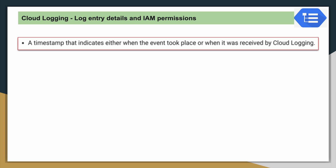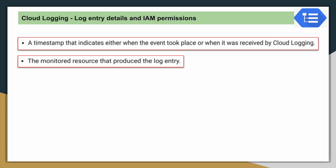What are the basic fields inside a log entry? First we have a timestamp — basically when that event or transaction is taking place related to any particular service. We also have a resource from where that particular log is triggered. For example, if you are trying to access BigQuery, that related log entry should have BigQuery as the resource.